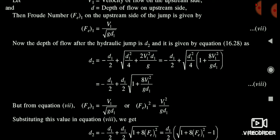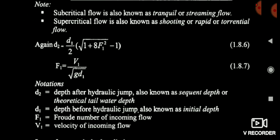The final result is: D2 = D1/2 × (√(1 + 8F²) − 1). That is the most important portion. D2 = D1/2 × (√(1 + 8F²) − 1). This is our formula and we have to use this formula because many times questions have been solved using this formula. So it is very important. And F = V1 / √(g·d1). This is the most important formula, and this is all about the hydraulic jump.